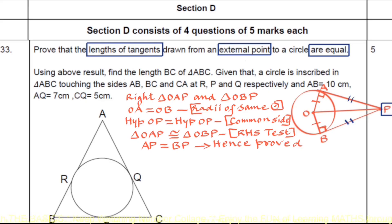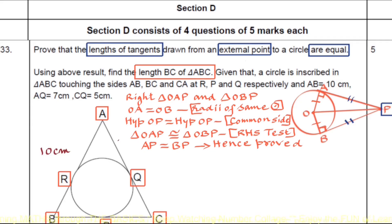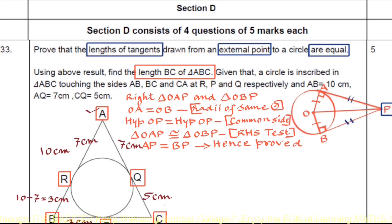Using this result, we find length BC of triangle ABC. A circle is inscribed in triangle ABC touching sides AB, BC, and CA at R, P, and Q respectively. Given AB = 10 cm, AQ = 7 cm, CQ = 5 cm. Since A is an external point, AQ = AR = 7 cm, so RB = 10 - 7 = 3 cm. Since B is external, BR = BP = 3 cm. Since C is external, CQ = CP = 5 cm. Therefore BC = BP + PC = 3 + 5 = 8 cm.